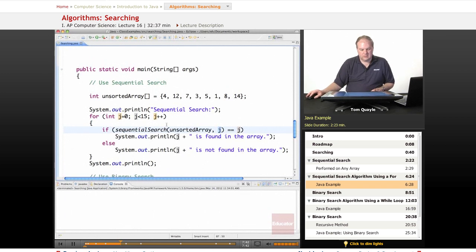And each time, if the sequential search method returns me a value equal to the value that I'm looking for, that indicates that the value was found. And I'm going to print this message that that value is found in the array. Otherwise, if the return value doesn't match what I'm looking for, then I'm going to print this message that the value is not found in the array.